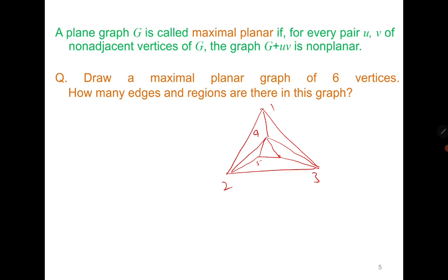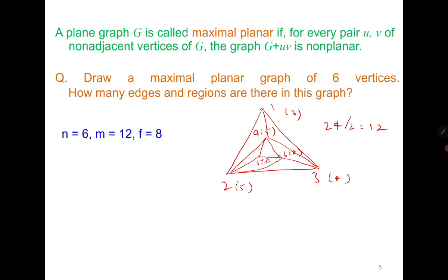Here is one of the maximal planar graphs on six vertices. To count the number of edges, it's best to compute degrees. The degrees are 5, 4, 3, 5, 3, and 4, giving a degree sum of 24, so the number of edges is 12. You can also verify that there are 8 regions.